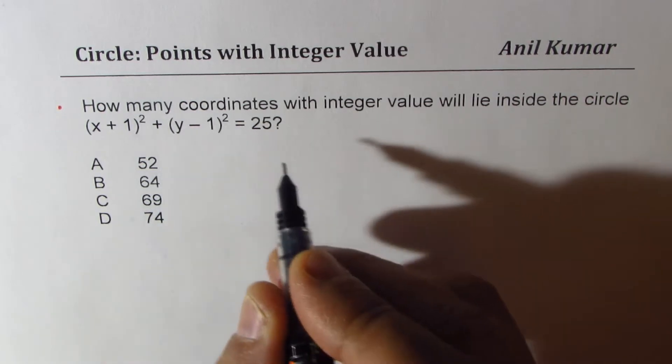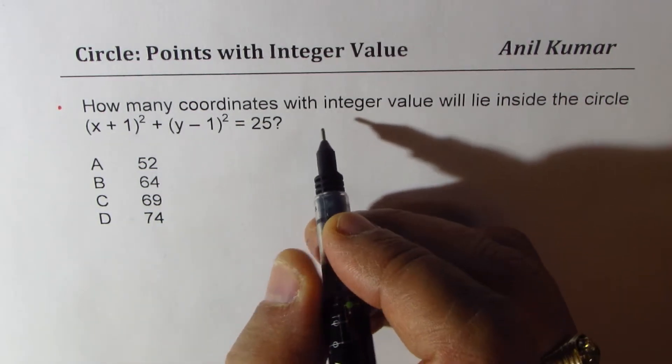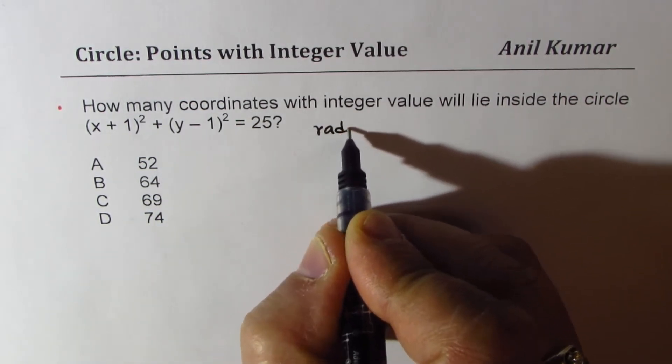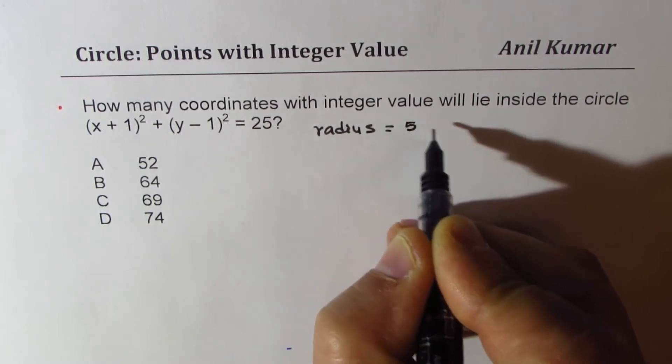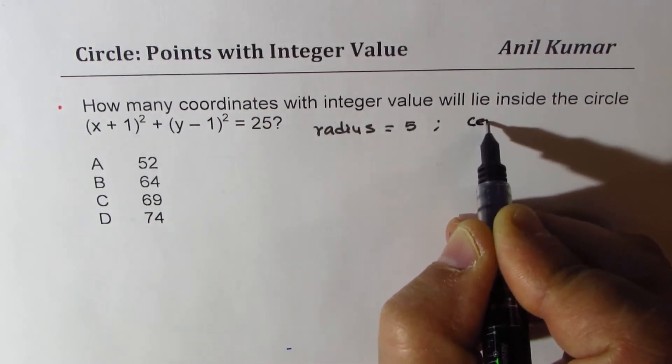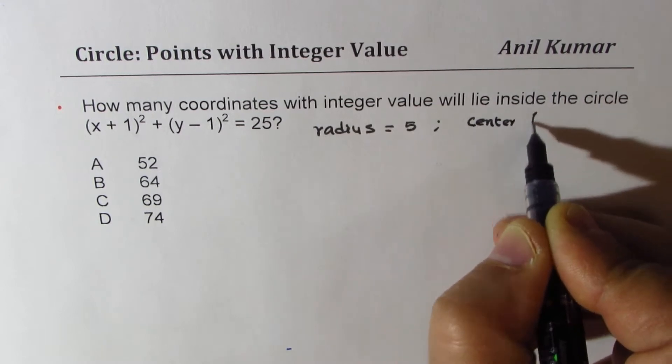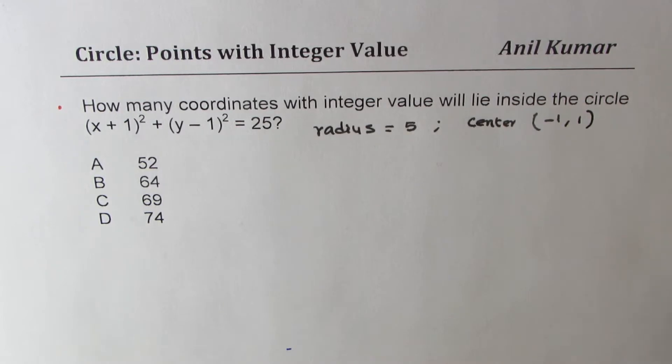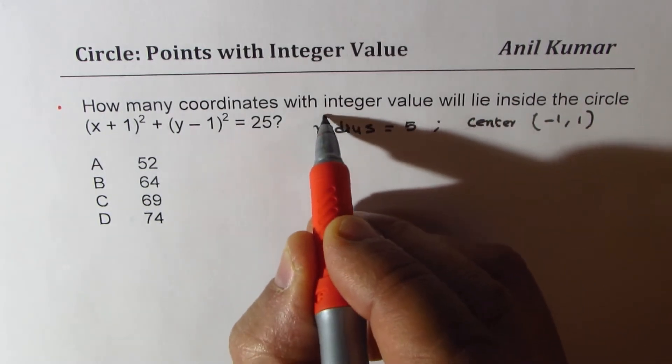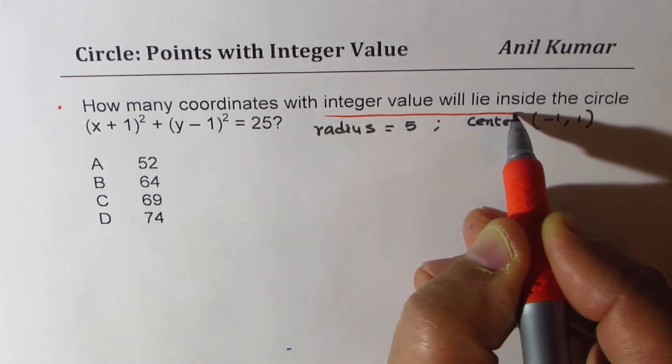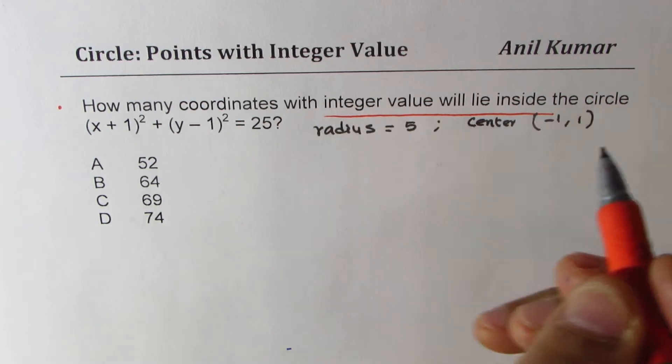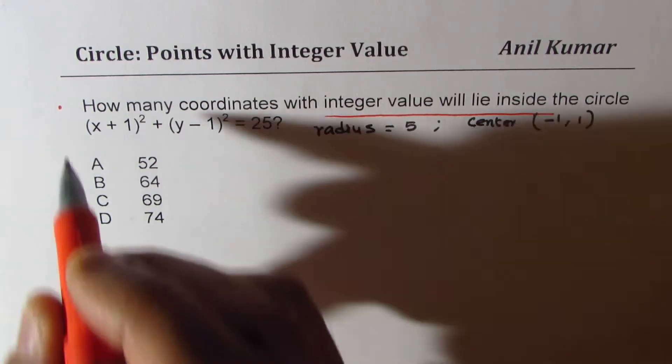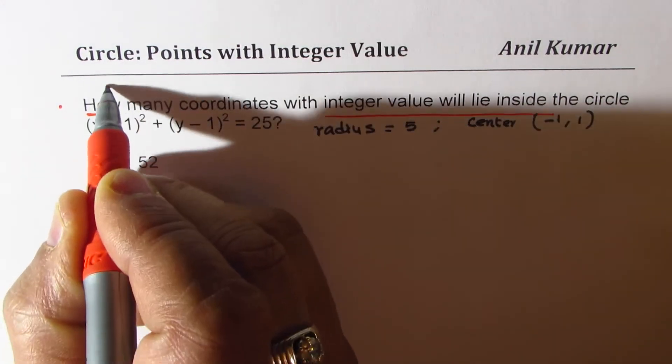So you will notice here that this circle has radius equals to 5 and center is now at (-1, 1). Now, not at origin. We are only interested in integer value of inside points and that means numbers, not the points, right? So how many means only numbers we are interested in.